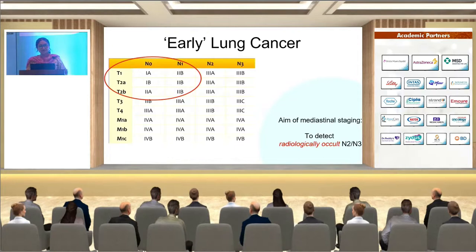Since we're kick-starting the session with this talk, let's begin with what exactly we characterize as early lung cancer. According to the AJCC staging — 8th edition, currently in use — anything that is T1, T2, or N1, N2 is early lung cancer. That means any tumor up to 4 centimeters in size, or node negative, at most hilar node positive — these come under early.